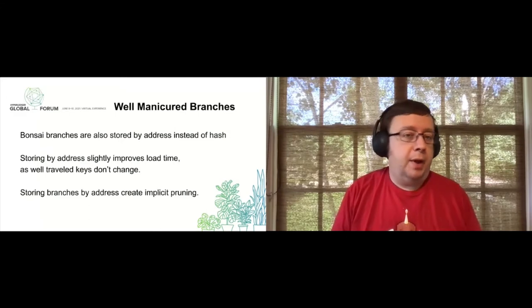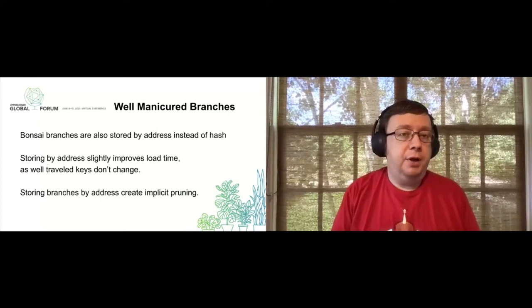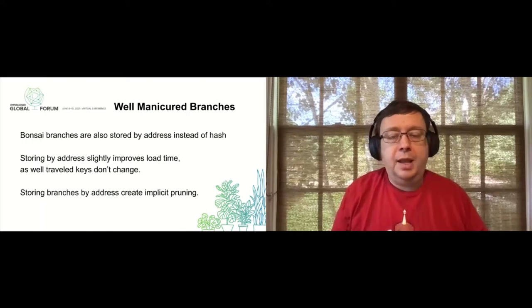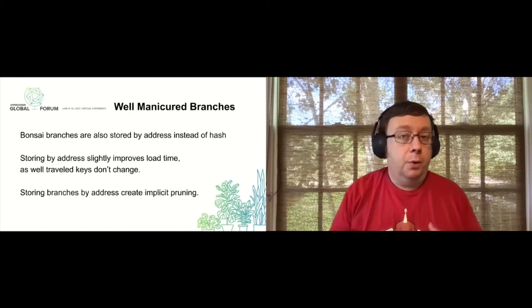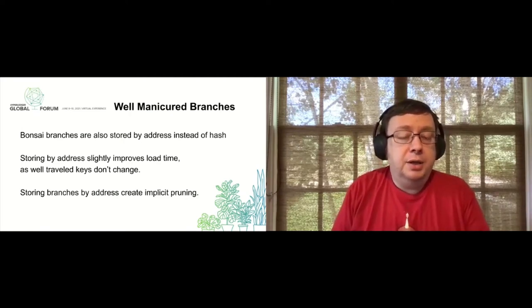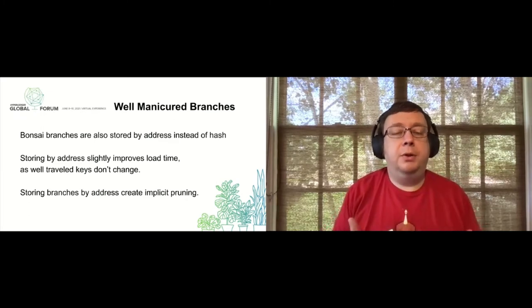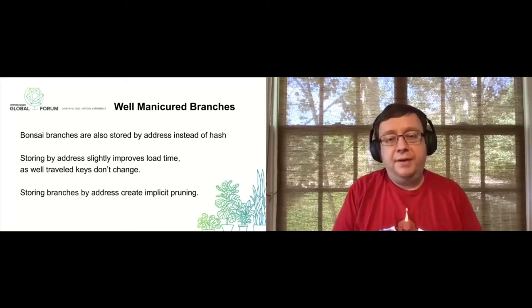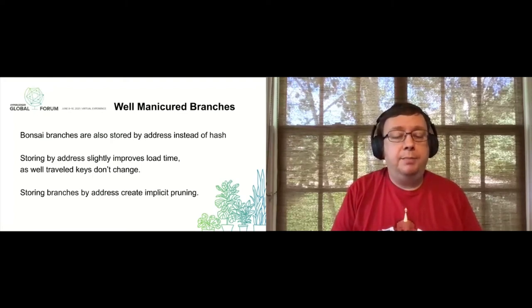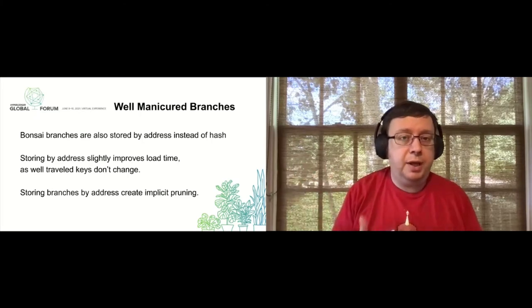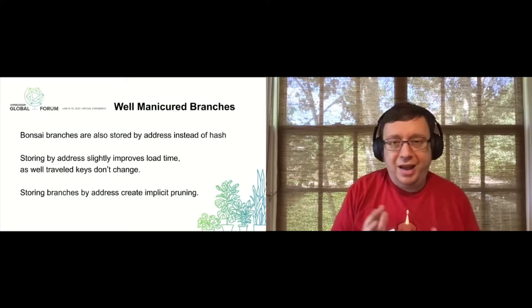For the branches, I keep them in a format I call 'well manicured.' We store the tree branches by their location on the tree, not by what the content is. In forest mode you have to store by content ID, but storing by location gives an immediate speedup and has a huge impact on database caching — the root tree node always has the same location, making caching much easier for the first two layers. The second side effect is implicit pruning: if you change a branch node at a particular location, you overwrite it instead of writing a new copy. We don't let stray branches grow out because they keep getting replaced by the new value.